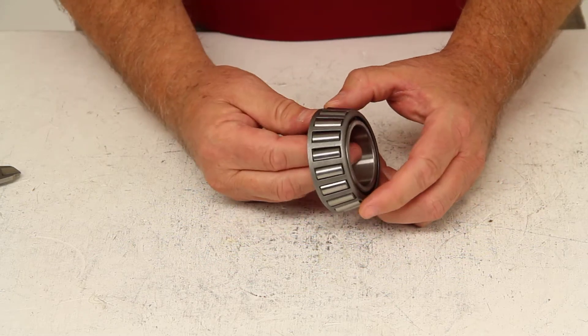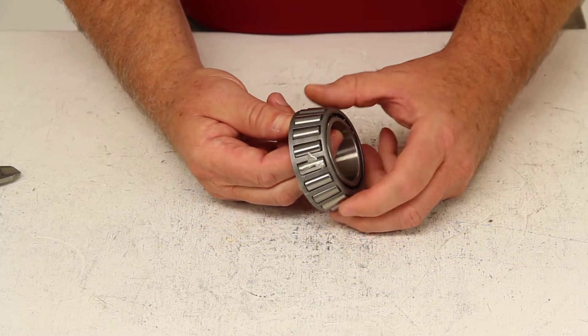The lubrication on the bearings is mainly from wheel bearing grease. Some bearings will use an oil also.